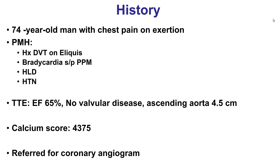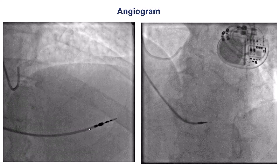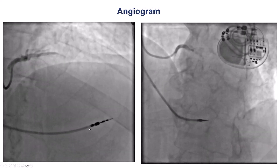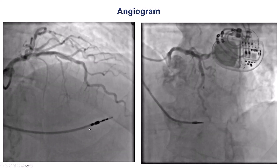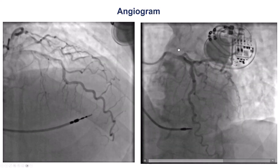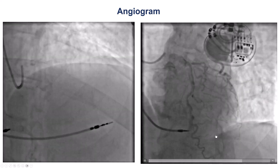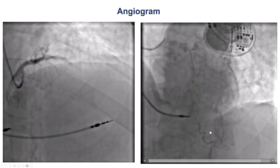The patient presented with angina. He had normal left ventricular systolic function with a slightly dilated ascending aorta and a very high calcium score. Coronary angiography showed moderate lesions in the LAD with a lot of tortuosity.